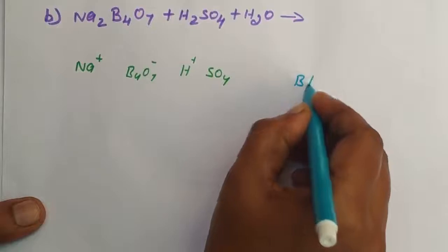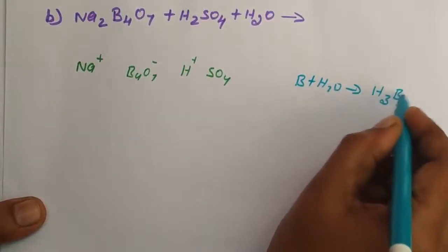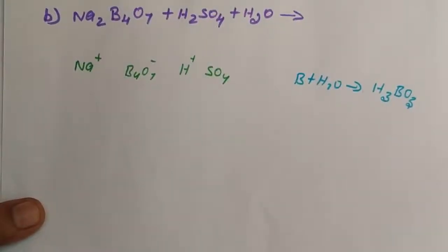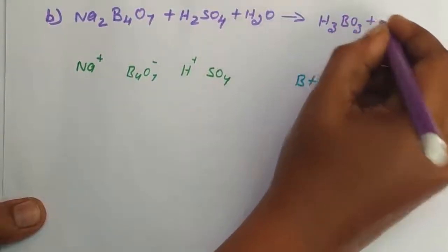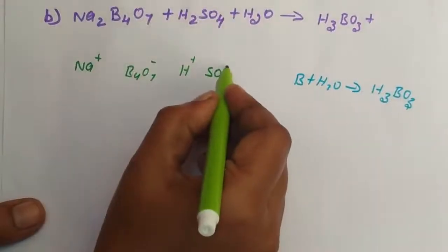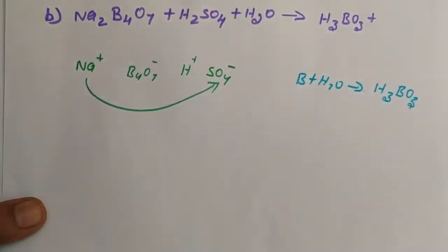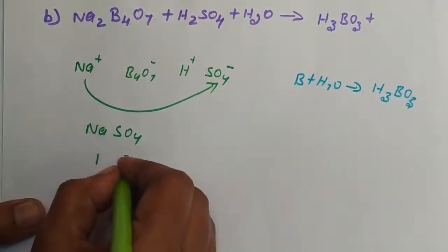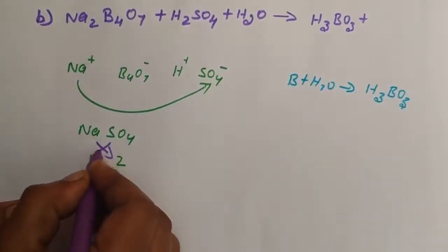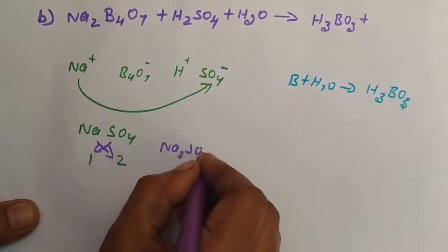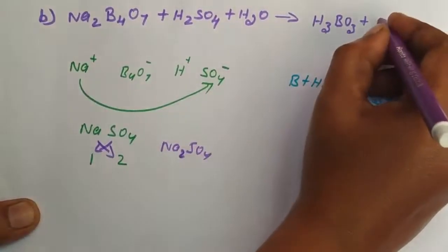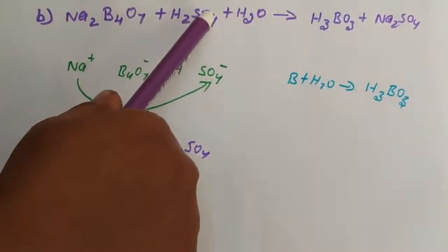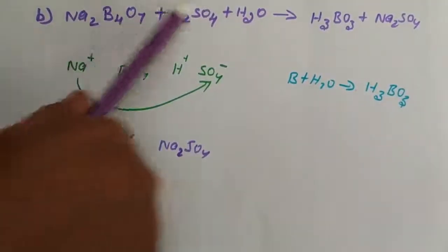So boron with H2O gives H3BO3 as one product — boric acid. Then Na plus and SO4 minus combine. Sodium has valence 1 and sulfate has valence 2, so cross-multiplying gives Na2SO4, sodium sulfate, as the other product.